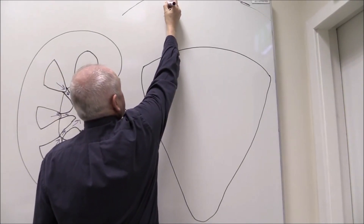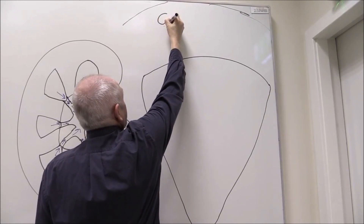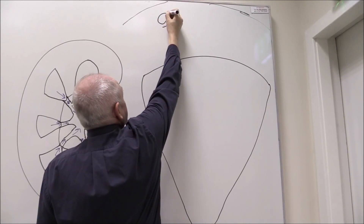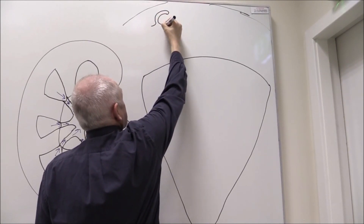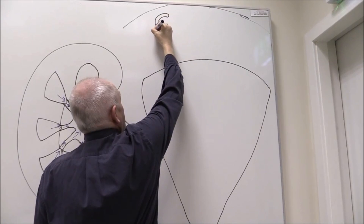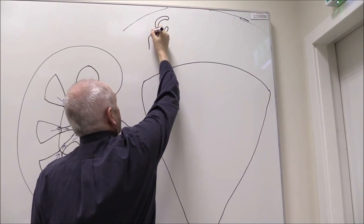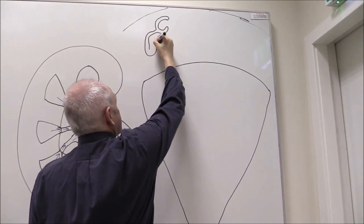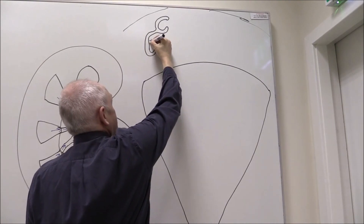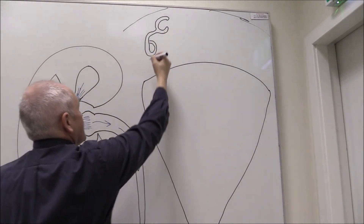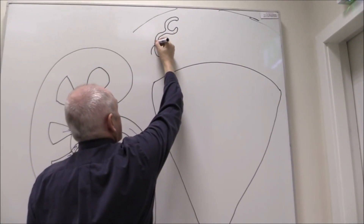So here we see a renal corpuscle. Here we have the capsule — Bowman's capsule. Then there'll be a first convoluted tubule where the kidney nephron loops around on itself to make it longer.